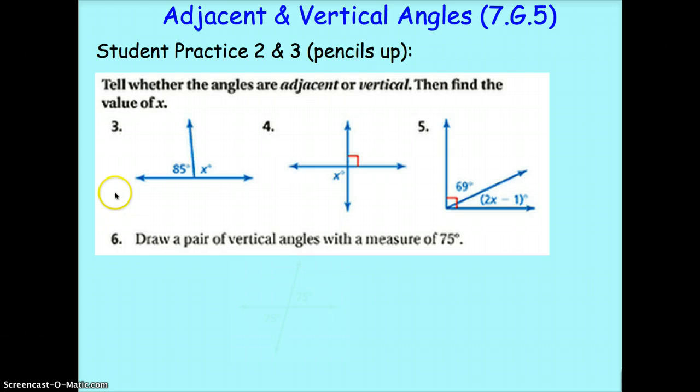Okay. Welcome back. Problem three. We're looking again. We've got a straight line, so we've got adjacent angles. One side's 85, so the other side must be 95. Here, we have two vertical angles. If one side's 90 degrees, the other side is also 90 degrees. Number five. Again, we have two adjacent angles because they are sharing a common side. We know they add up to 90 degrees, so we have to do a couple steps to solve for X, and you should have found 11.